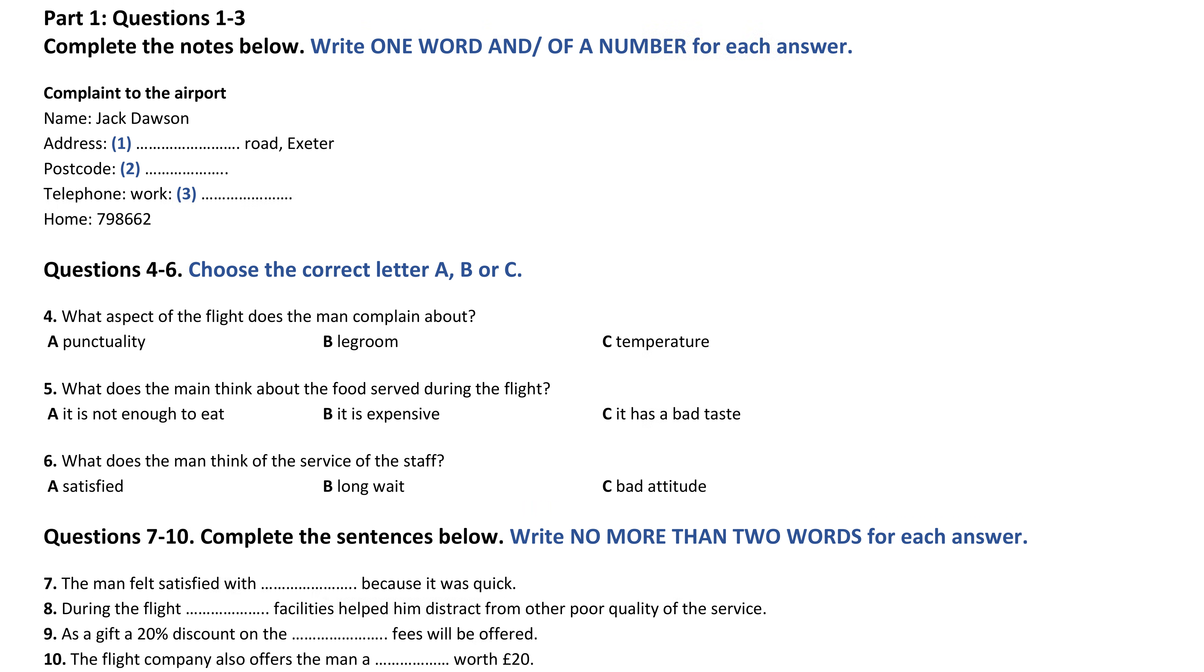And your address? It's 33 Hillcrest Road, that's H-I-double L-C-R-E-S-T. 33 Hillcrest Road, is that in Exeter? Yes. And what is the postcode of the residence? It's AL6 9 8GQ. Thank you. Do you have a telephone number? Yes, the number at my office is 754688. That's good. And may I just take a home phone number for you in case of emergencies? No problem, it's 798662. Are they both local numbers? Yes.